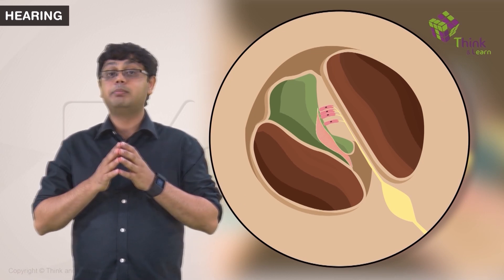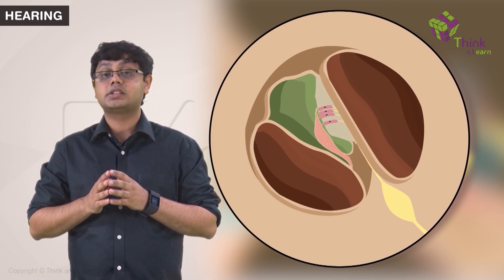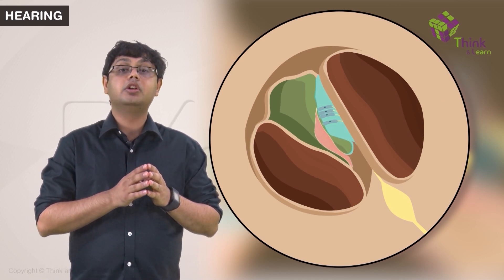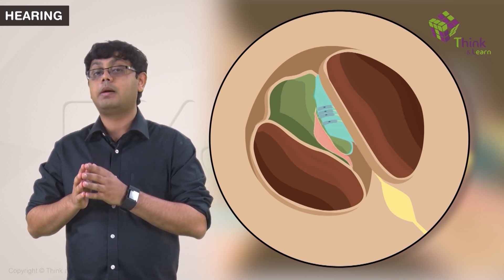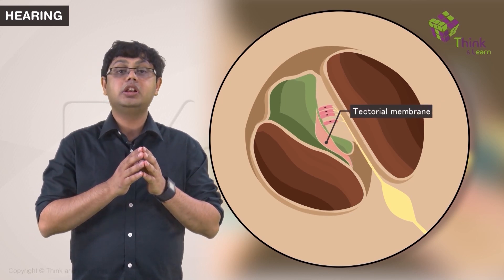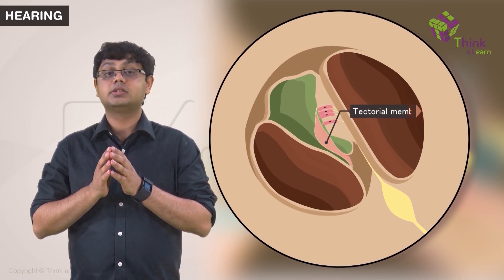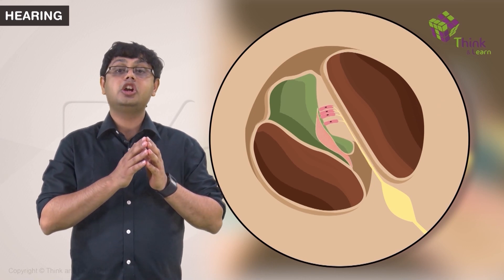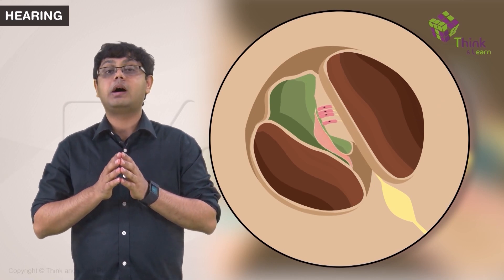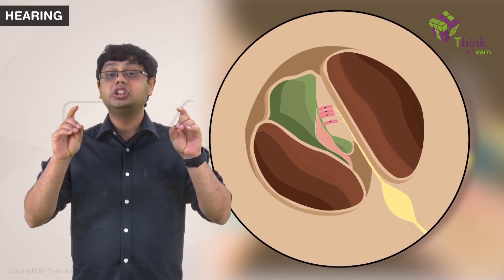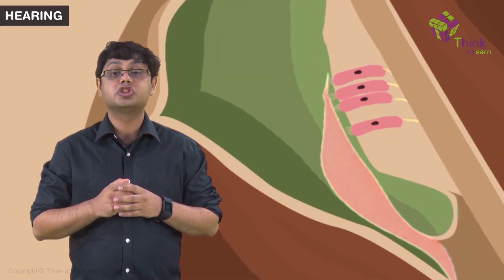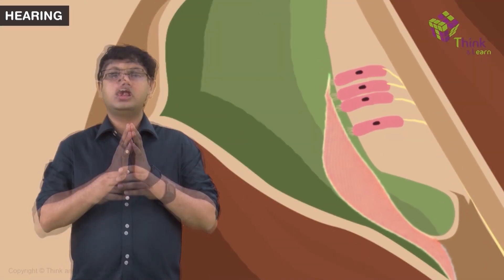Now, as the basilar membrane is displaced, the organ of Corti also moves up and down. The tectorial membrane is attached by a hinge-like mechanism, and as a result, it also moves up and down. The opposing shearing forces of movement of the basilar membrane and the tectorial membrane make the membrane rub the hair cells in an opposing direction.